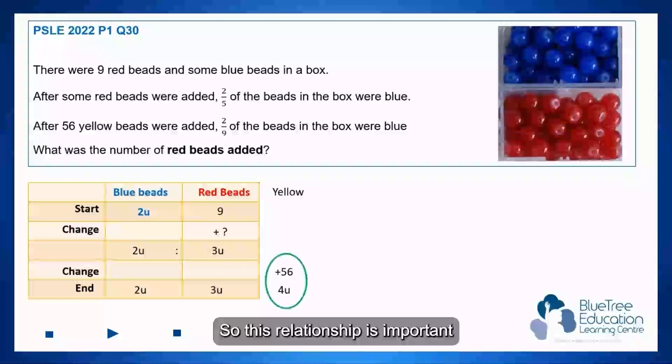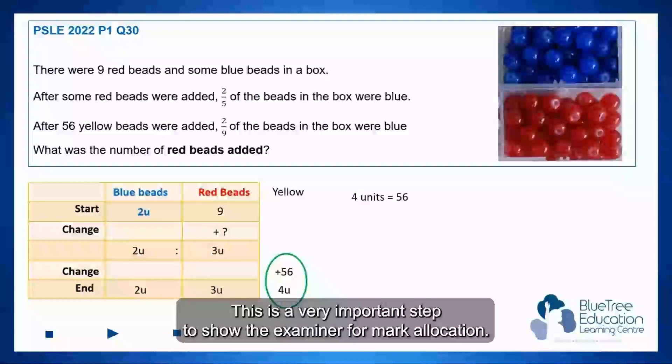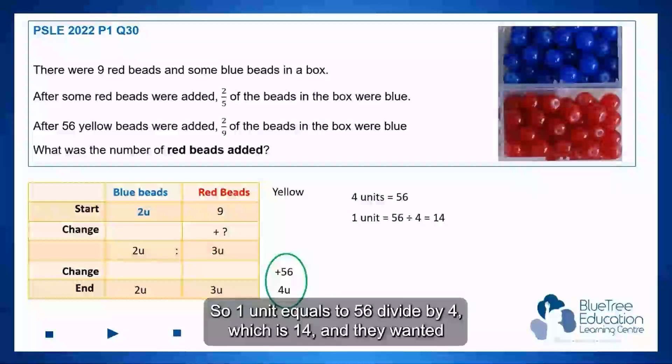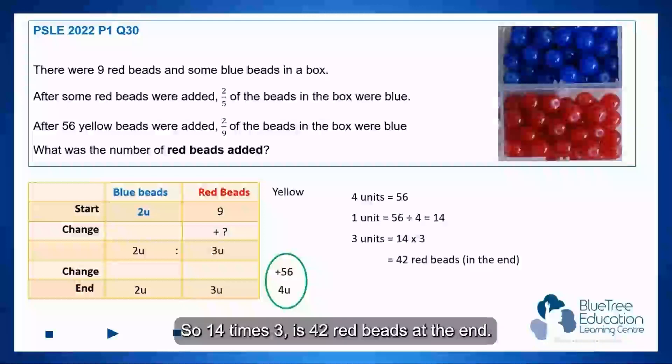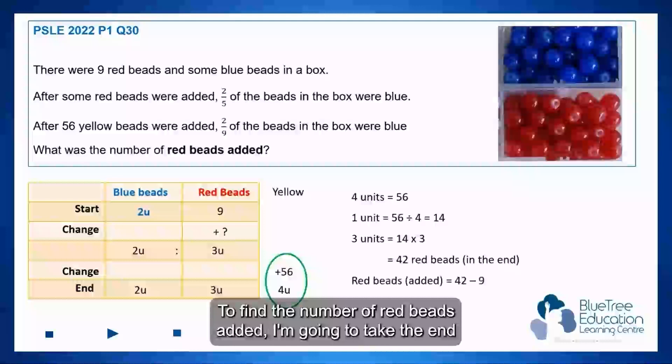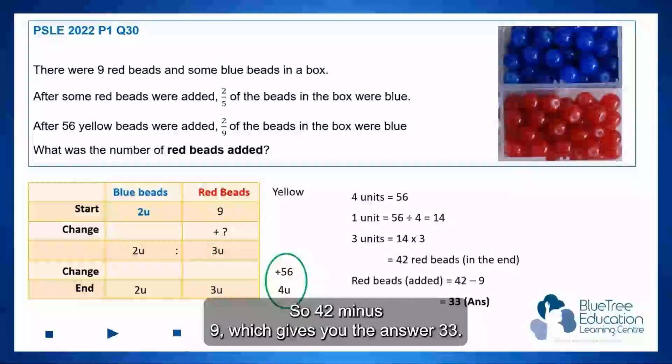So this relationship is important because this is our first link: four units equals 56. This is a very important step to show the examiner for mark allocation. So one unit equals 56 divided by 4, which is 14. They wanted to find the number of red beads added, which is three units at the end, so 14 times 3 is 42 red beads at the end. To find the number of red beads added, I'm going to take the end minus the beginning, so 42 minus 9, which gives you the answer 33.